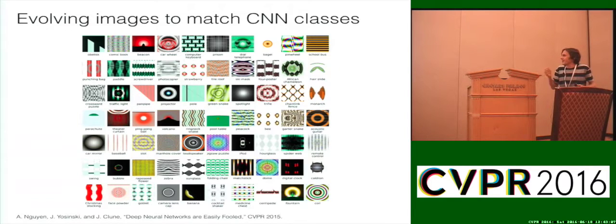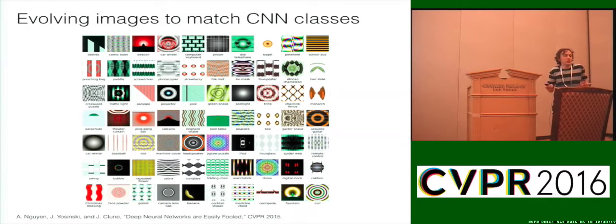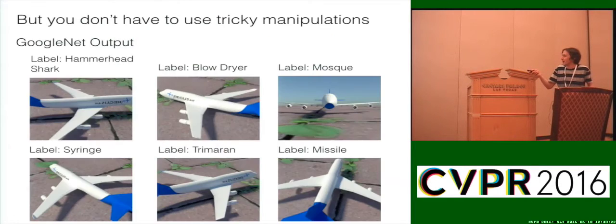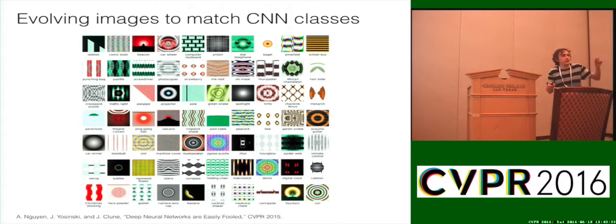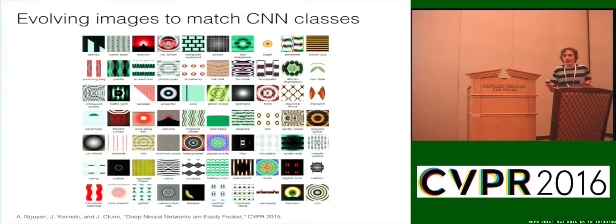Deep learning has other issues. Many of you may have seen the talk at last year's CVPR by Jeff Clune's group at the University of Wyoming about fooling images — visually they look nothing like the classes they're being labeled as. Every label here is drastically wrong. You can think of this as an open set-style effect: somewhere in the feature space you ended up far from where you should have been, and there was no facility to reject these crazy inputs.